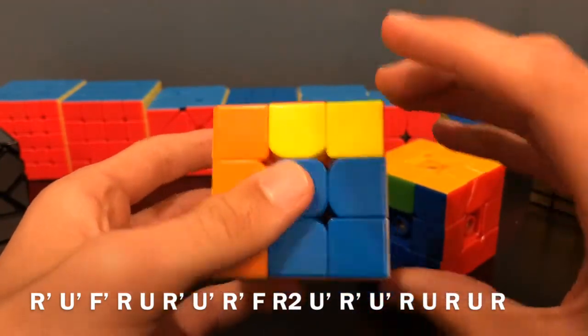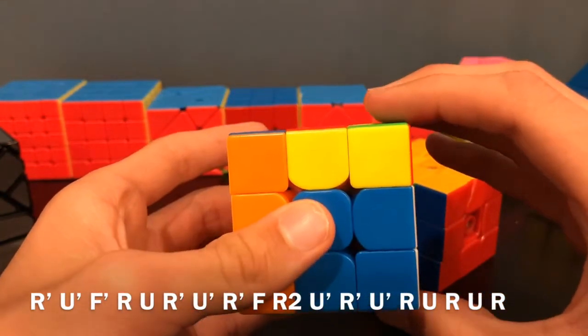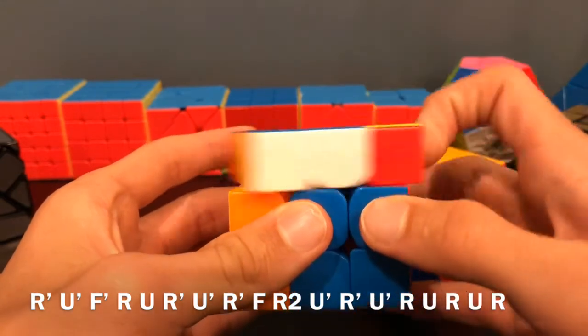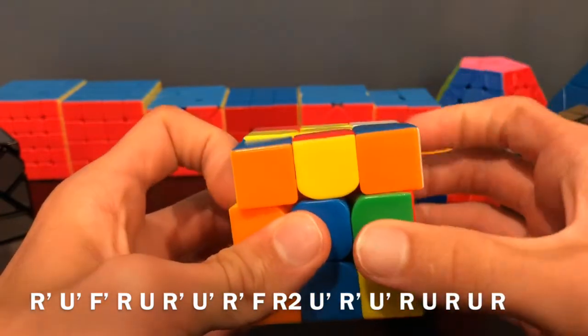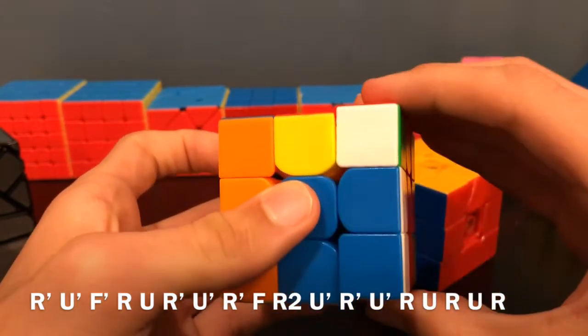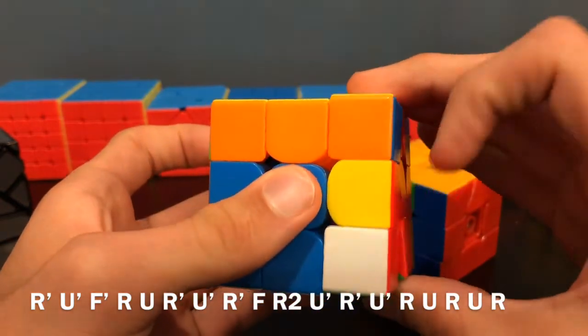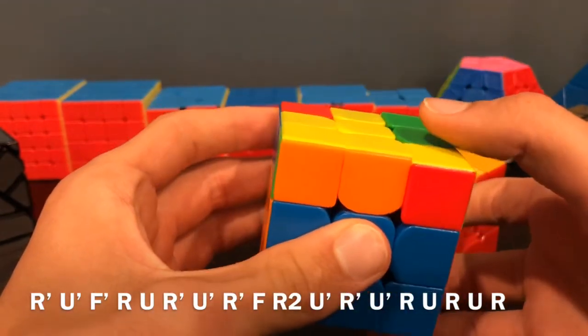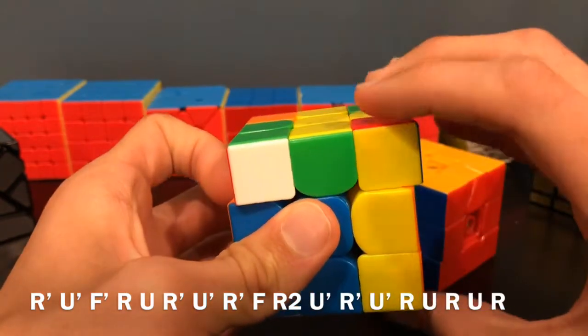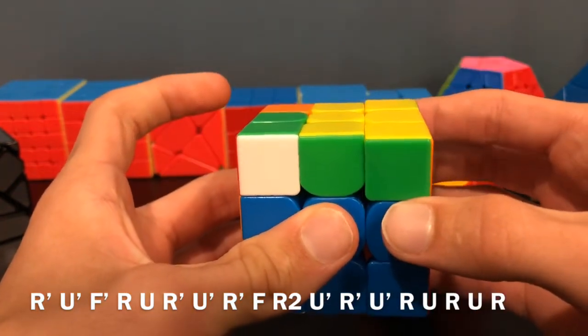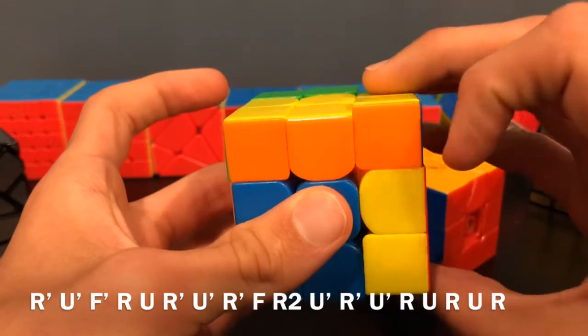Now I'm going to do the exact T-perm. I'll just say the letters out loud anyway. R U R' U' R' F R2 U' R' U' R U R' U R.